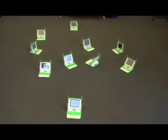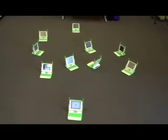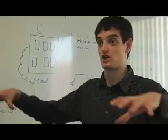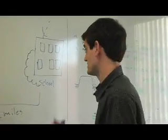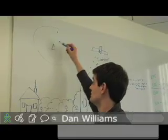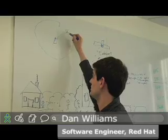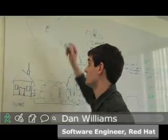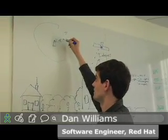Each laptop has a range, so you can think of it like clouds. If each laptop has a small cloud around it, when the clouds intersect they're meshed, and that makes the entire mesh bigger as you keep adding more laptops. In the case of wireless networking, this might be around 300 feet.